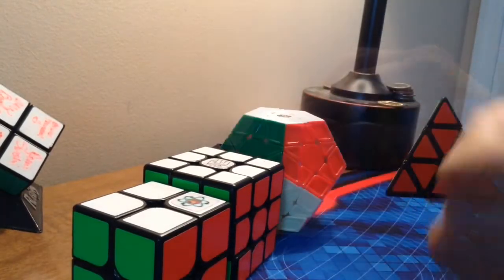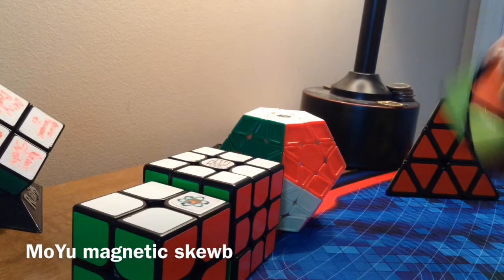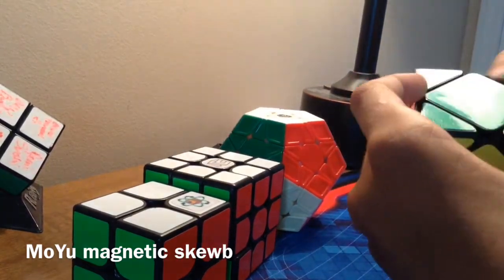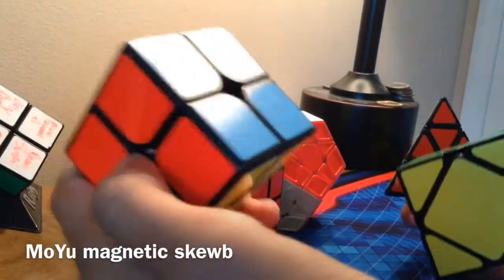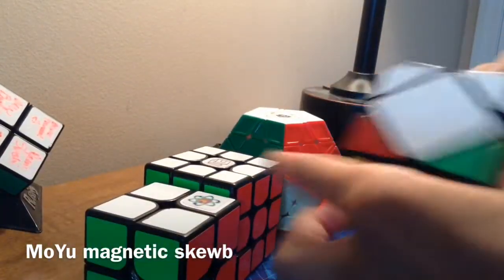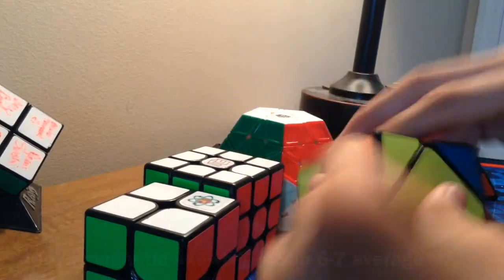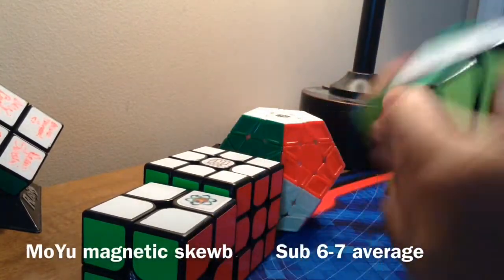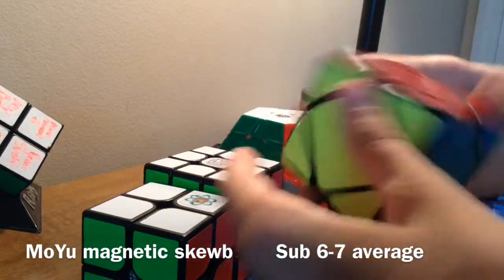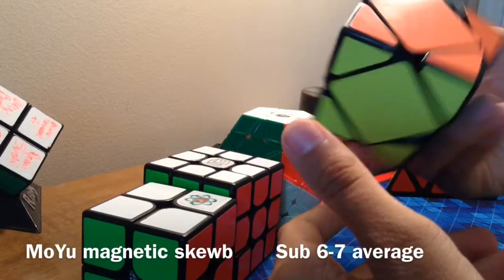So for Scube, which is the event that I'm most excited about, I use the Moju Magnetic Scube, as I said, with the 2x2. And I am hoping for a sub-7 average. Maybe sub-5 single.